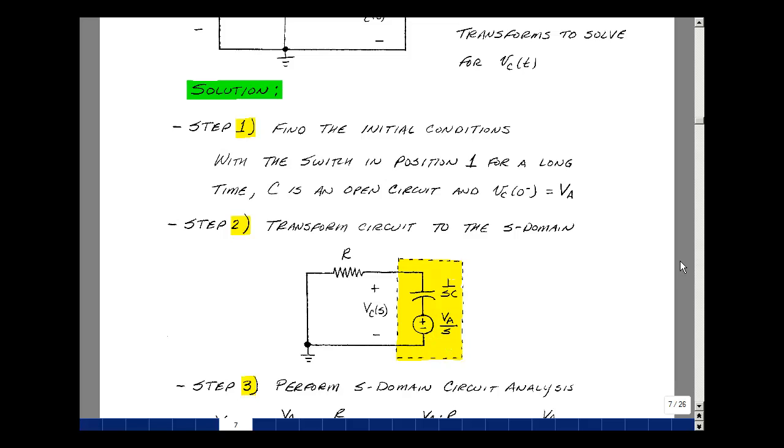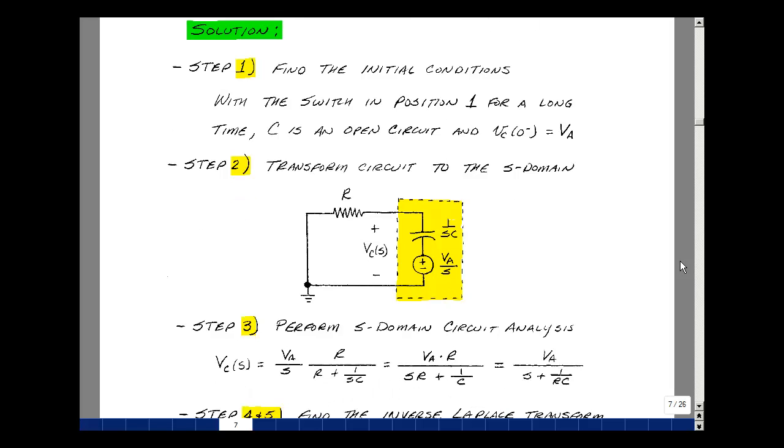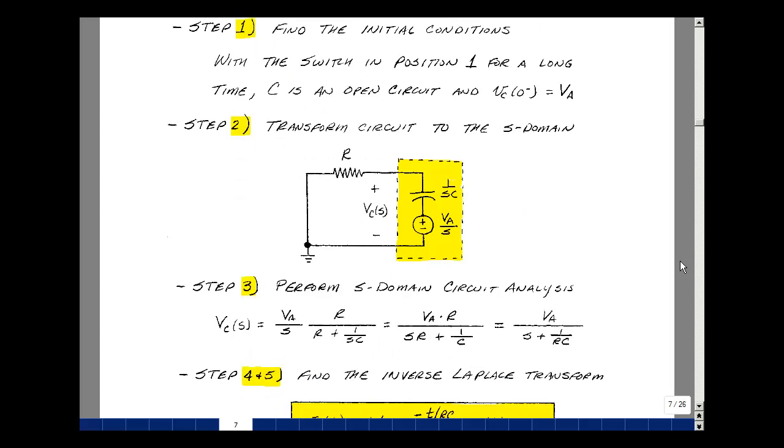Now let's do the S domain circuit analysis and solve for the voltage v sub c of S. We have a voltage divider if you look at it from the right to the left. So my resistance R is voltage dividing with this capacitor, R over R plus 1 over SC, and then my source is v sub a over S.